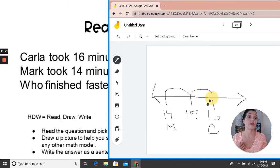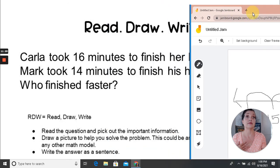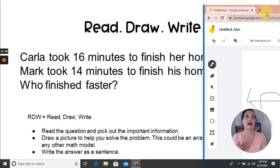So there's one, two jumps. So I know that Mark was two minutes faster in completing his homework than Carla. Let's go back to our question. Because now it's time to write a complete sentence. And I want to use information from the question in my answer. So I want to say, Mark finished faster. How much faster? Two minutes.